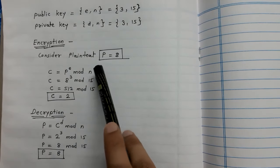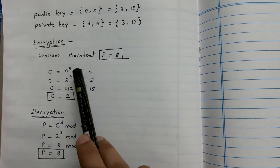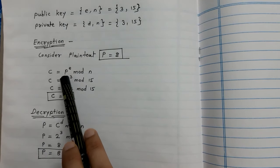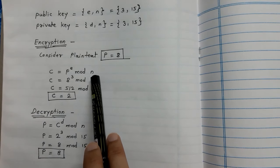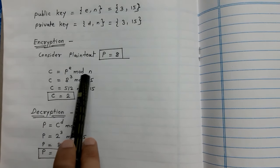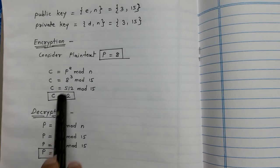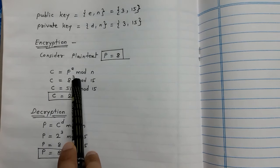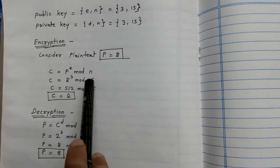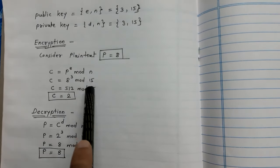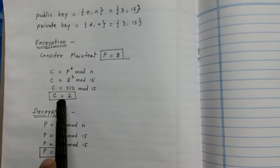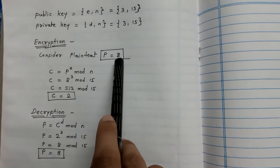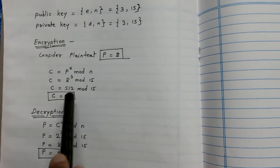Now we proceed to encryption and decryption. For encryption, the plaintext is 8. Using the formula C = P^E mod N, we substitute: C = 8^3 mod 15. After calculation, the ciphertext C = 2. So encrypting plaintext 8 gives us ciphertext 2.